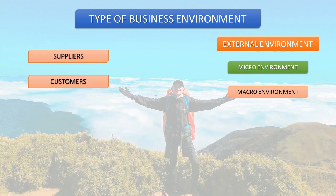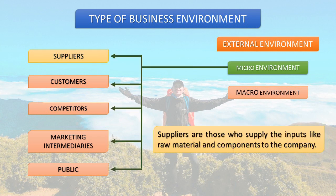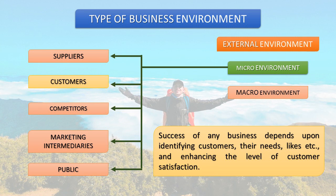The factors of micro environment are: first, suppliers; second, customers; third, competitors; fourth, marketing intermediaries; and lastly, public. Suppliers are those who supply inputs like raw materials and components to a company. Uncertainties regarding supply can constrain the company to maintain high investment in inventories, causing cost increases. Customers: the success of any business depends upon identifying customers, their needs, likes, etc., and enhancing the level of customer satisfaction. The major task of a business is to create and sustain customers.